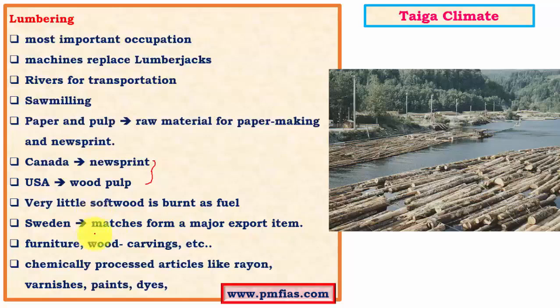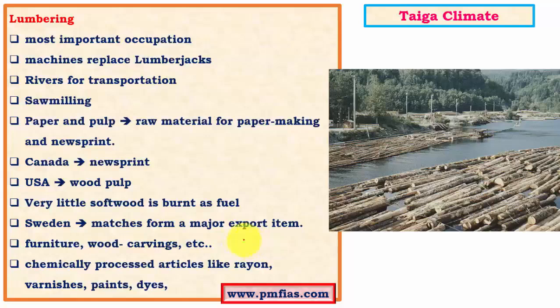Sweden exports a significant quantity of matches obtained from the lumbering industry. Countries in Scandinavia as well as parts of Canada, the USA, and Siberia have significant Taiga forests that support a profitable timber industry. Wood pulp is also used for making Rayon, a synthetic fiber obtained from the natural source of wood pulp.